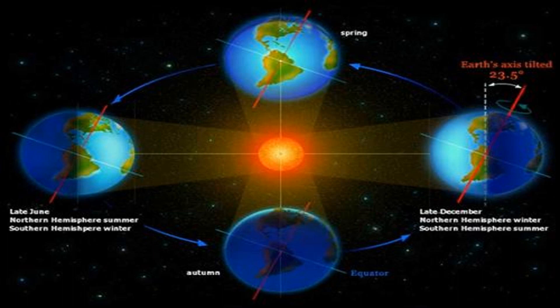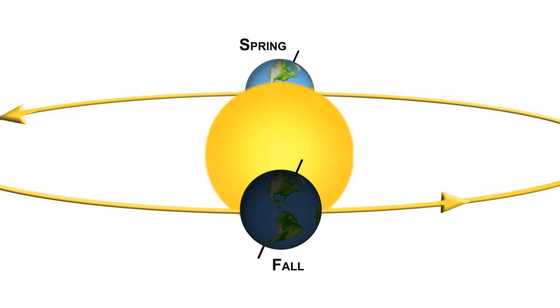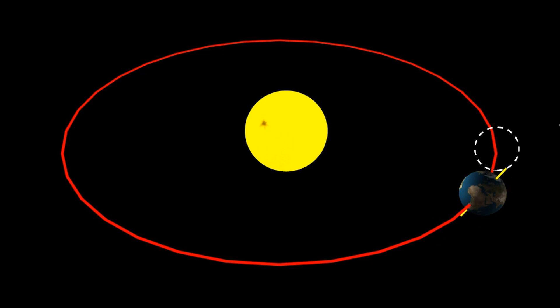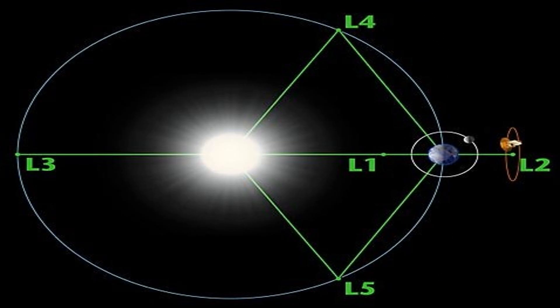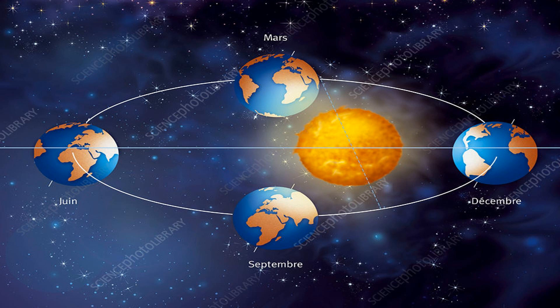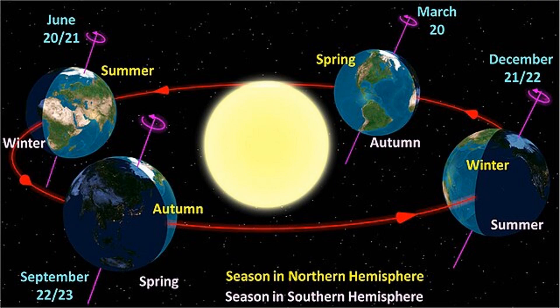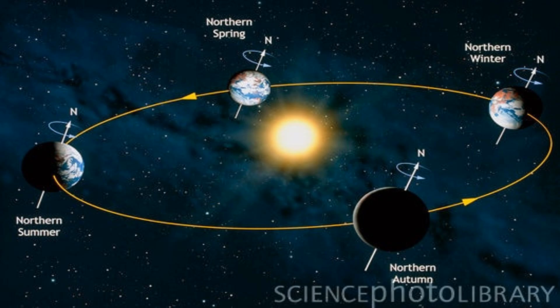The Earth orbits the sun in an elliptical path, taking approximately 365.25 days to complete one revolution. This orbit ensures that the Earth experiences different geometrical positions relative to the sun throughout the year. During certain points in its orbit, the Earth is closer to the sun — perihelion — while at other times it is farther away — aphelion. These variations in distance, combined with the axial tilt, contribute to the phenomena of changing seasons that we observe on our planet.